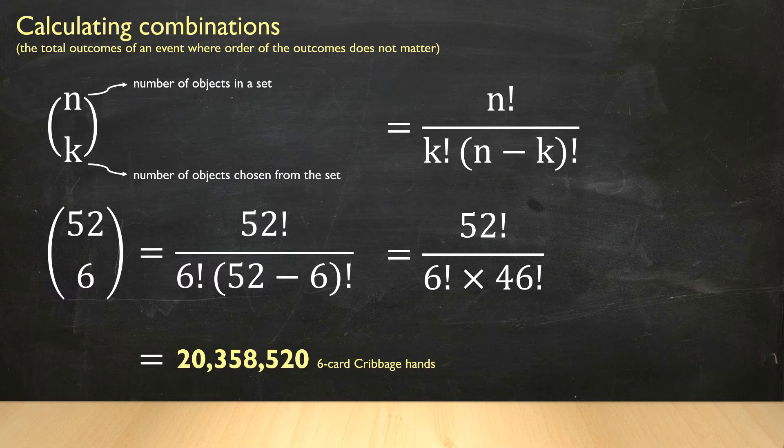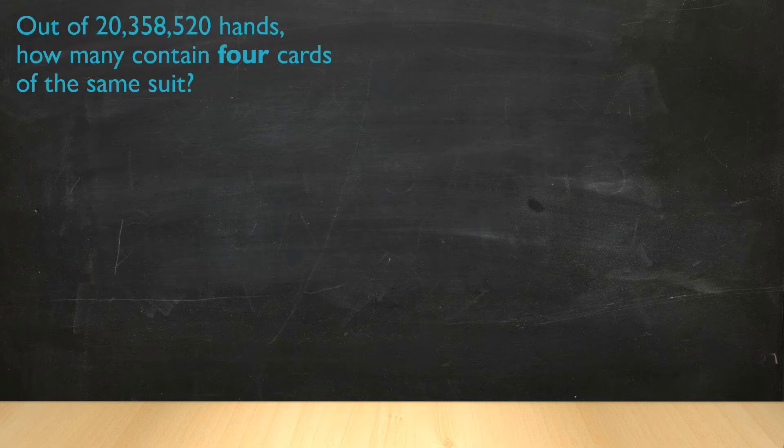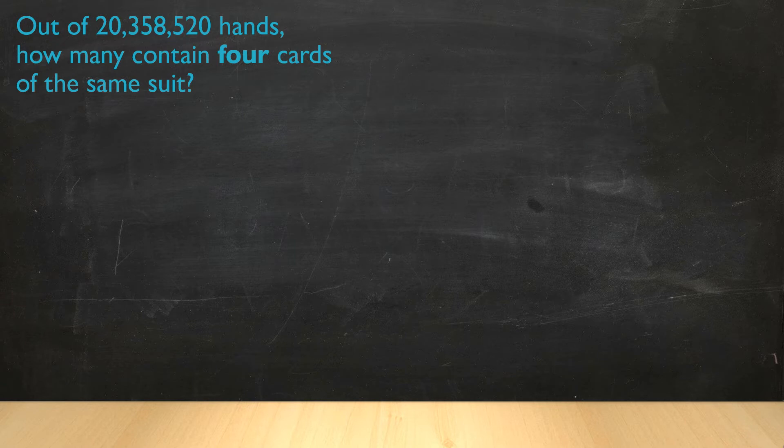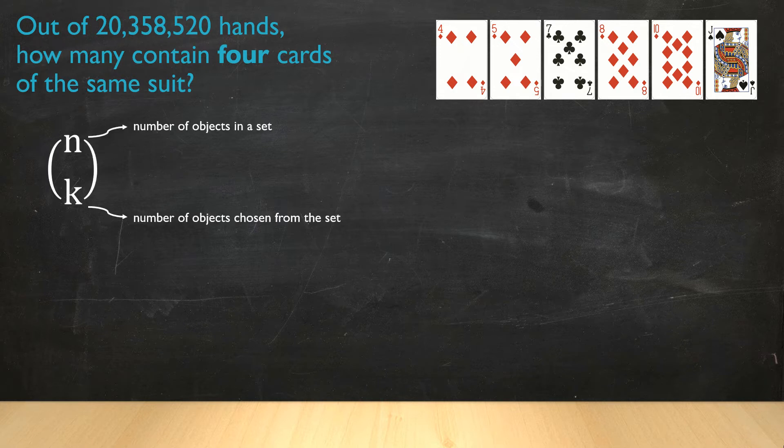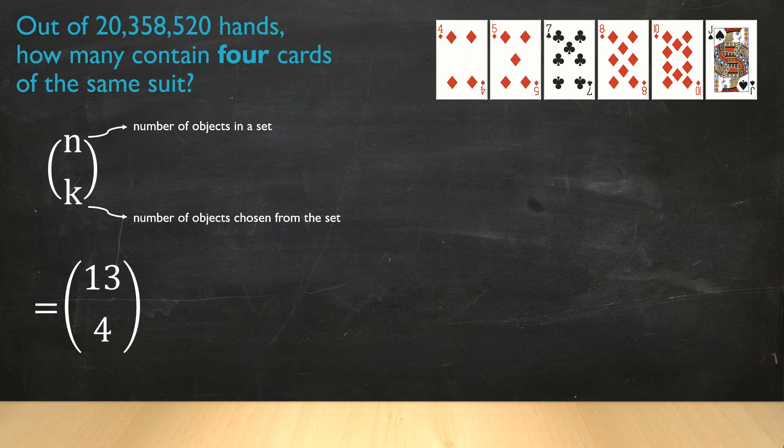Now let's calculate how many flushes exist. Let's start with four cards of the same suit. Out of 20,358,520 possible hands, how many of those contain four cards of the same suit? Like this example. We use the same combination formula. So in this case, our N value, the number of objects in our set is 13, because there are 13 cards in each suit. Our K value, the number of objects we want from that set is four. So 13 choose four.